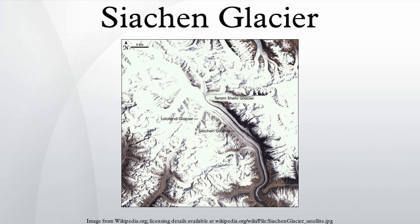Border conflict: The glacier region is the highest battleground on Earth, where Pakistan and India have fought intermittently since April 1984. Both countries maintain a permanent military presence in the region at a height of over 6,000 m. After the Pakistani incursions during the Kargil War in 1999, India abandoned plans to withdraw from Siachen without official recognition of the current line of control by Pakistan. Prime Minister Manmohan Singh became the first Indian Prime Minister to visit the area, calling for a peaceful resolution. President of Pakistan Asif Ali Zardari also visited the area during 2012 with Pakistan Army Chief General Ashfaq Parvez Kayani.